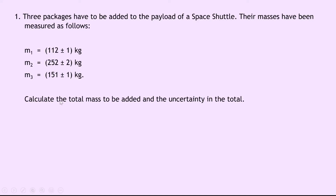Question one says three packages have to be added to the payload of a space shuttle. Their masses have been measured as follows. So we've got masses M1, M2 and M3 with their values of mass plus or minus their uncertainties in kilograms, and it says calculate the total mass to be added and the uncertainty in the total. So if we find the total mass first of all, all we do is add up all our values on the left hand side, and we get an answer of 515 kilograms.